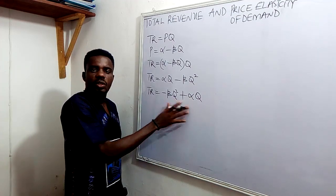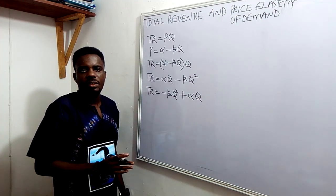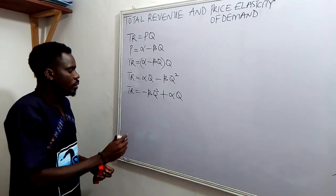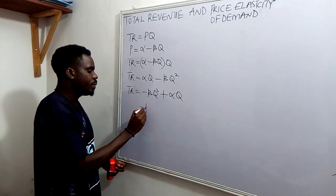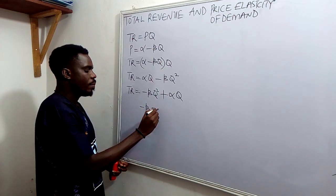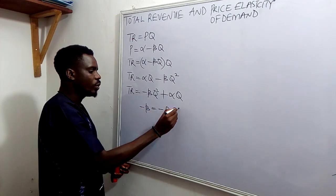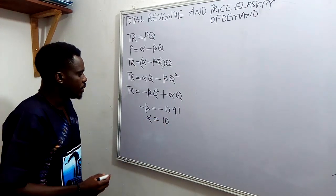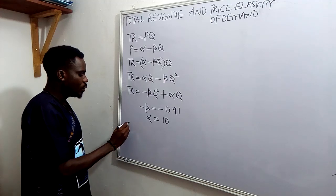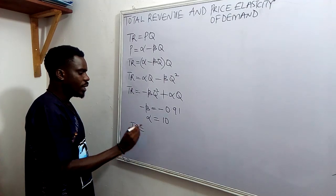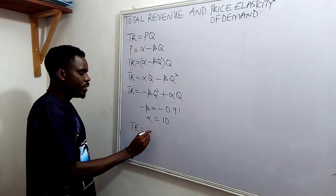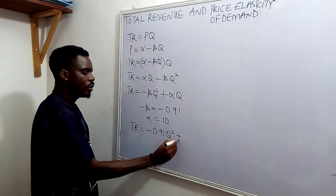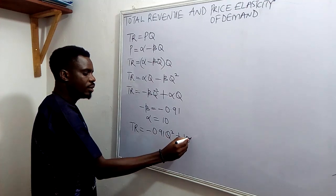This is a typical equation for a quadratic equation. In terms of numeric expression, from the last video, we obtained minus beta as minus 0.91 and alpha as 10. As such, we can express our total revenue function as minus 0.91 Q squared plus 10 Q.